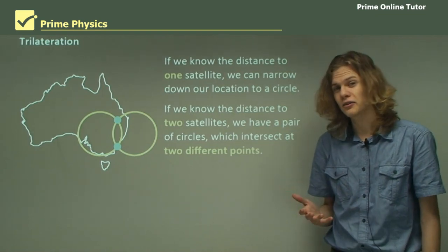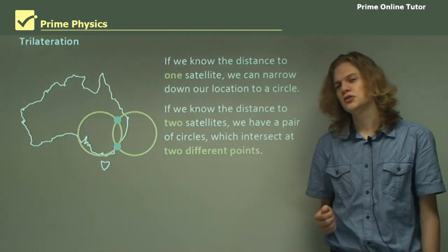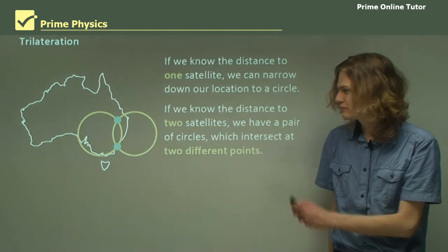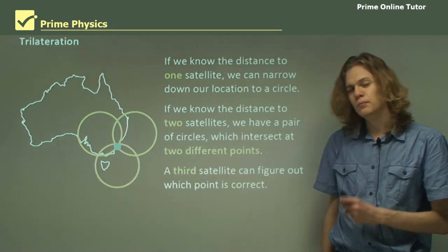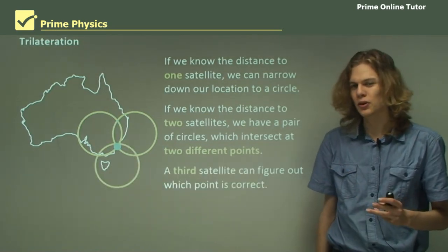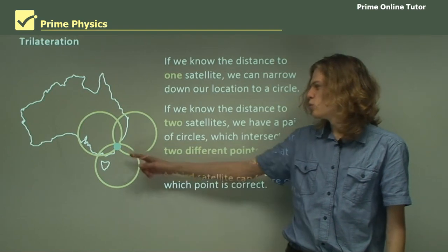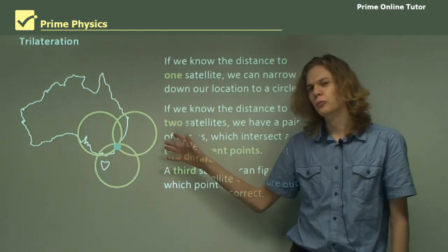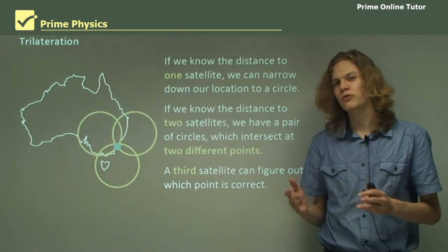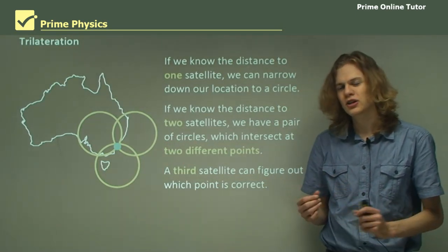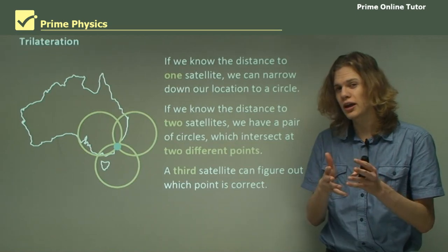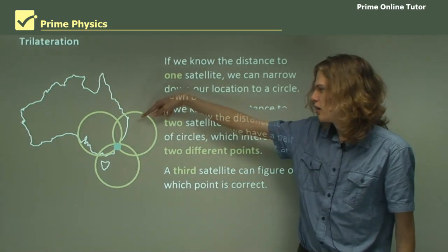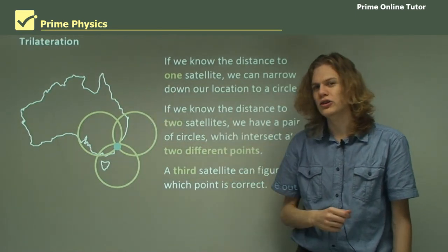So what if we ask a third satellite where we are? It will give us a circle of possibilities too. And if we combine that with the first two circles of possibilities, we end up with only one location. Remember that these circles will probably not all be the same size. They'll more often be very different sizes, depending on whether the satellite is directly overhead or quite a fair distance off from where you currently are.